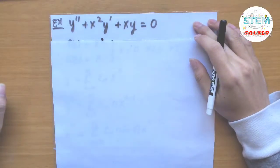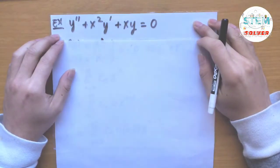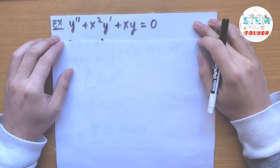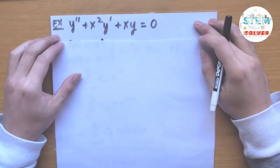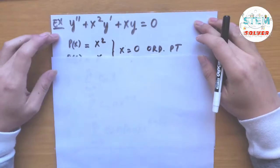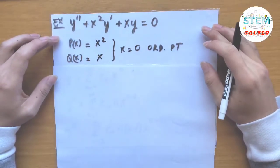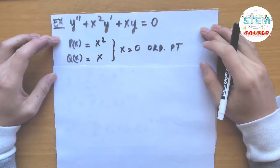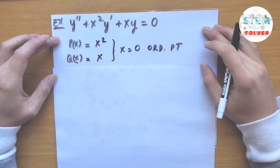Solve a homogeneous differential equation y double prime plus x squared times y prime plus x times y equals 0. First, let's take a look at p of x and q of x. So p of x is equal to x squared and q of x is equal to x, so x equals 0 is an ordinary point.